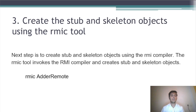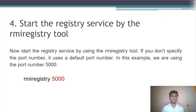Step three: create the Stub and Skeleton object using the RMIC tool. The RMIC tool invokes the RMI compiler and creates the Stub and Skeleton objects. This is how we run it: rmic AdderRemote. Step four: start the registry service by the RMI registry tool. If you don't specify the port number, it uses the default port number. In this example we are using port number 5000.